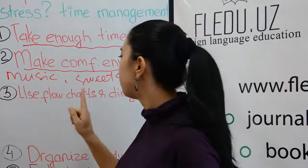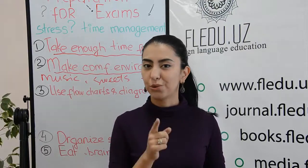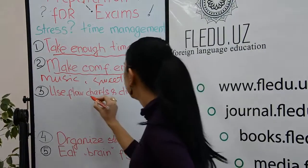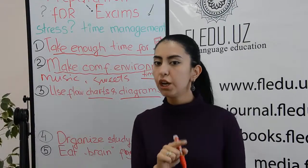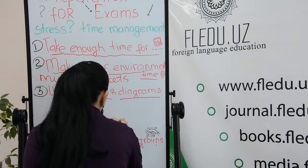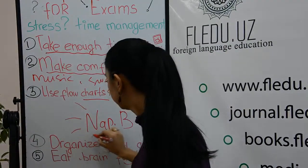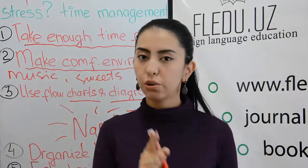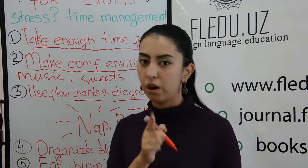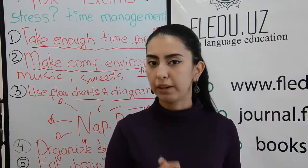Next, use flowcharts and diagrams. It's impossible to read a whole book and remember everything without note-taking. Take your own notes, then you can make charts and diagrams. For example, if you are preparing for a history exam, let's take Napoleon Bonaparte — you can make a cluster with the year, wars, or other detailed information that should be remembered.